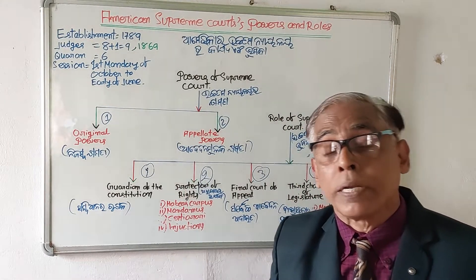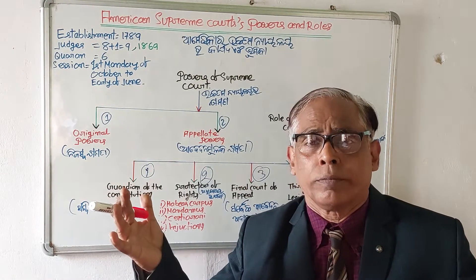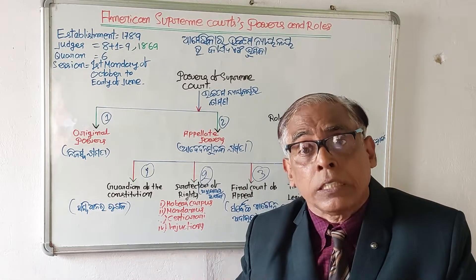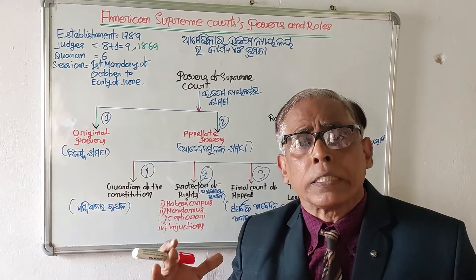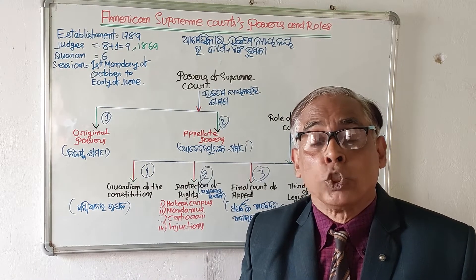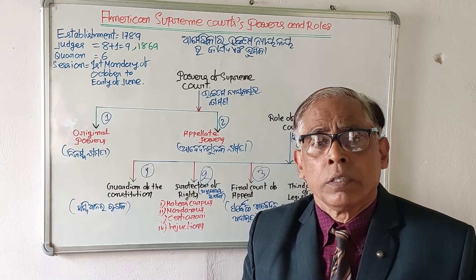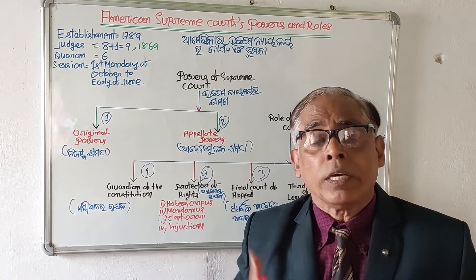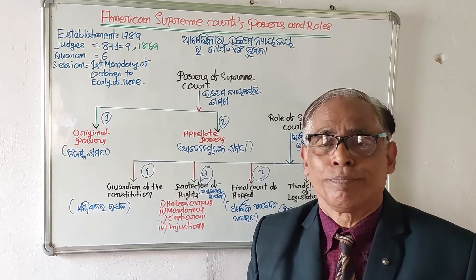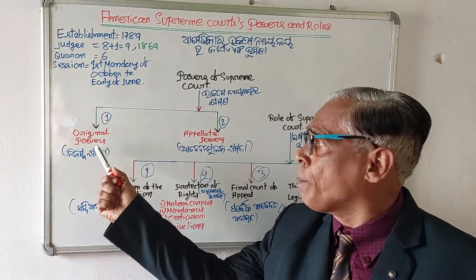Now I will discuss the appellate power of the American Supreme Court. The American Supreme Court is the highest court of appeal in the country — it is the topmost court. It can hear appeals against the decisions of lower courts. If any person is not satisfied with the verdict of a lower court, he can appeal to the Supreme Court. However, it is the Supreme Court itself which will decide whether it will hear the appeal against a decision of any lower court or not. That covers the two powers of the American Supreme Court: original power and appellate power.